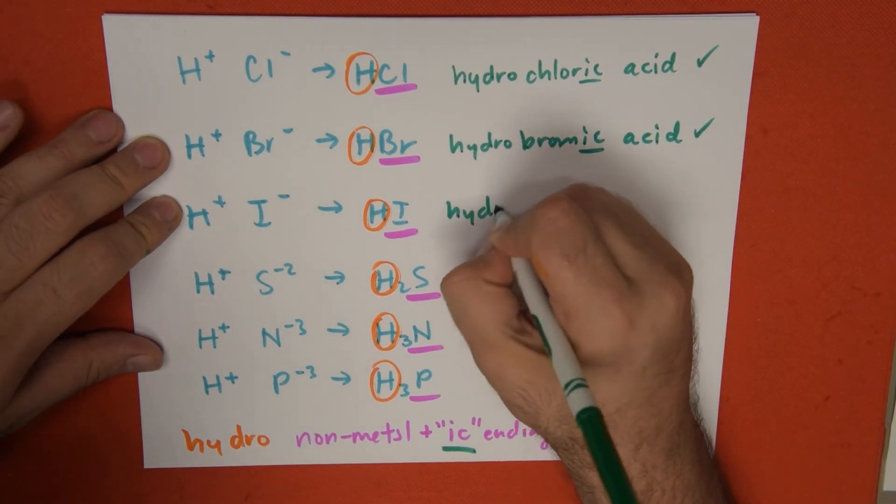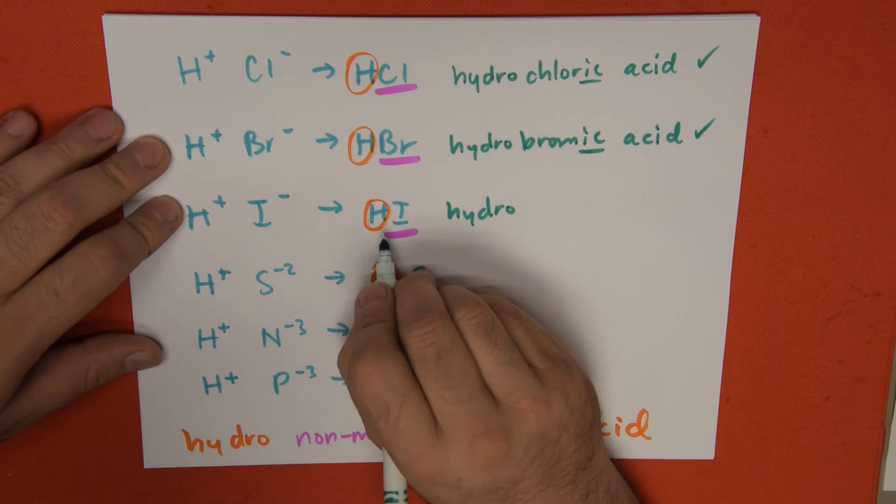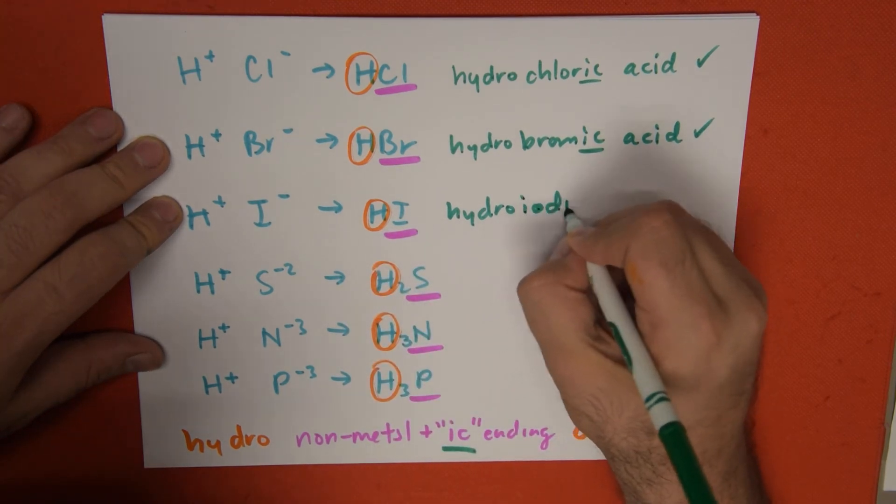Next: hydro-iodine, not ionine, turns into iodic. Hydroiodic acid.